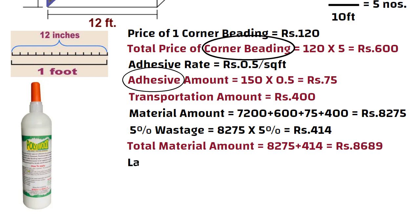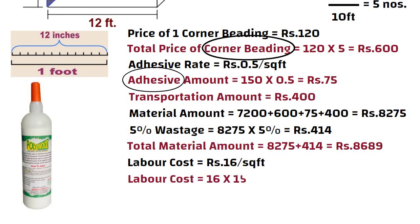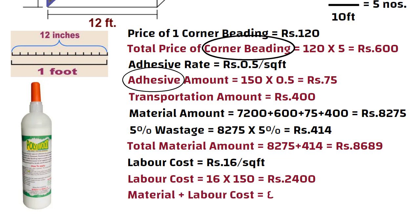The installation rate of PVC panels in the market is 16 to 18 rupees per square feet, so 16 x 150 is equal to 2400 rupees. So we can say 11,089 rupees shall be required for supply and installation of PVC panels on a 10 feet by 15 feet wall.